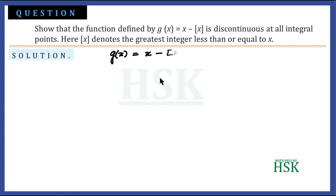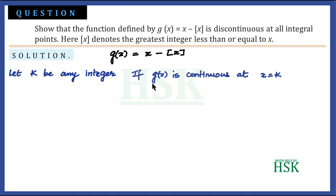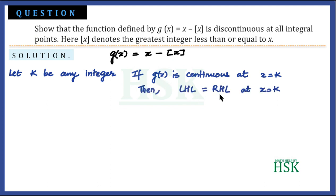Let k be an integer. If g(x) is continuous at x = k, then the left-hand limit and the right-hand limit should be equal at x = k.